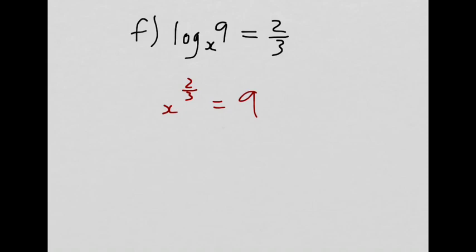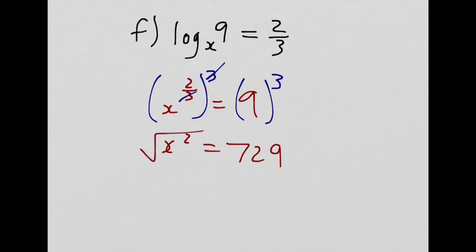One thing you could do is, to get rid of the cube root, you know this is being cube rooted, you could cube both sides. So I raise both sides to the power of 3. That will take care of the cube, giving me x squared equals 9 to the power of 3 is 729. And then I can square root and get x equals only the positive root again, 27.